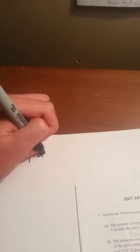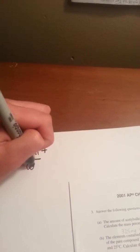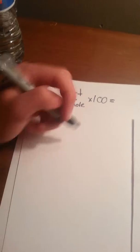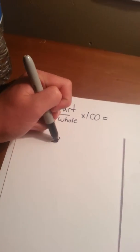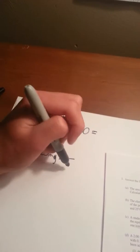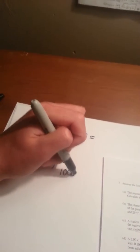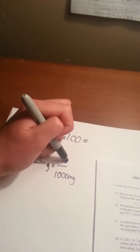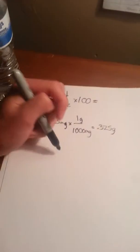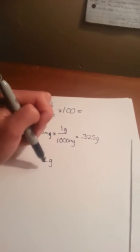Part 1 tells us that the amount of acetylsalicylic acid in a single aspirin tablet is 325 mg, yet the tablet has a mass of 2 g. Calculate the mass percent of acetylsalicylic acid in the tablet. This is just mass percent - part over whole times 100. The part in this case is the acid, 325 mg. I'm going to convert that into grams, which equals 0.325 g.